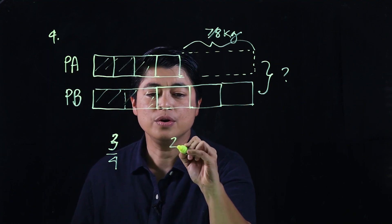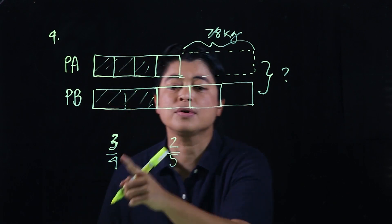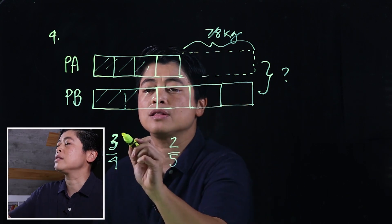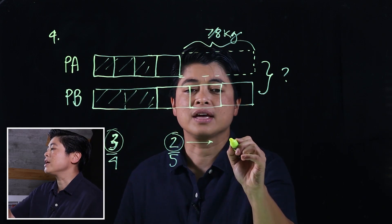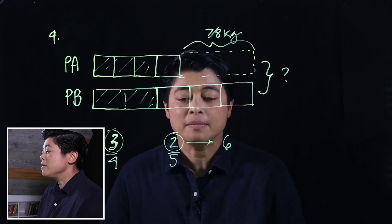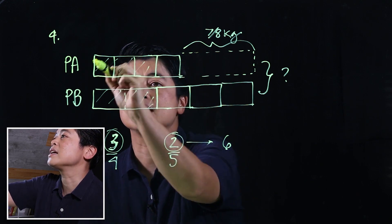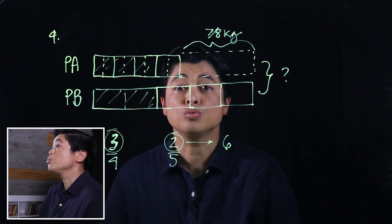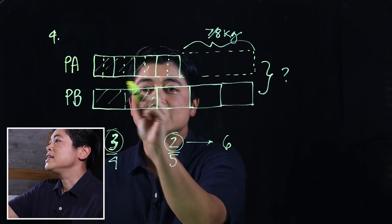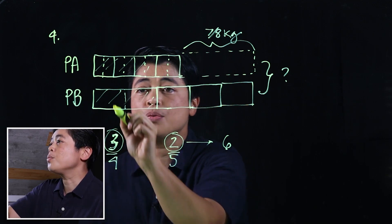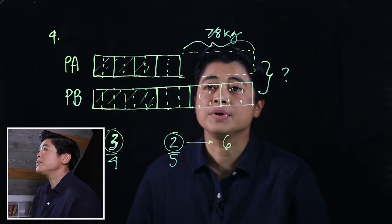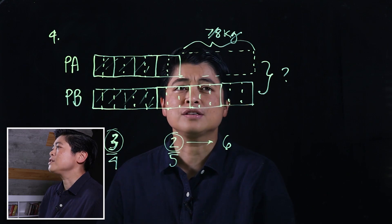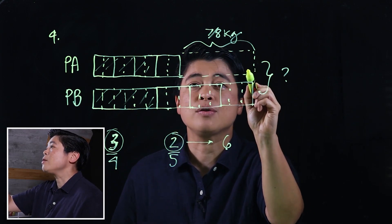To solve this, we need the numerators of three-fourths and two-fifths to be the same. We want the same number of divisions in each bar. The LCM of 3 and 2 is 6, so we make both equal to six-sixths. For the three-fourths bar, each box is divided into 2, giving 6 divisions. For the two-fifths bar, each box is divided into 3, also giving 6 divisions.